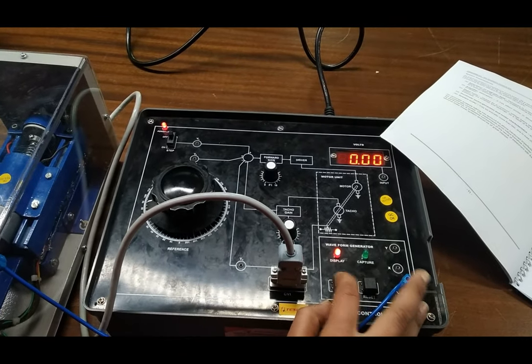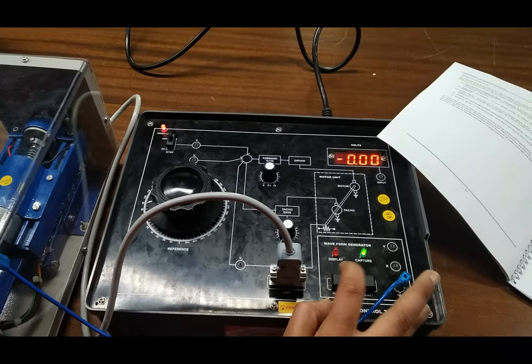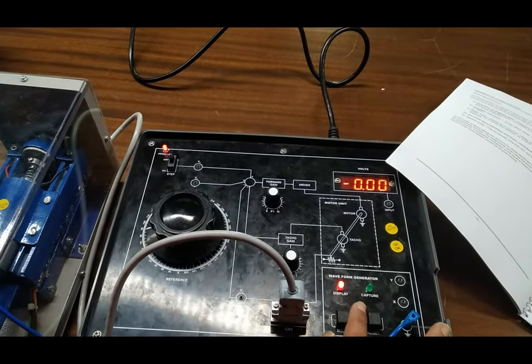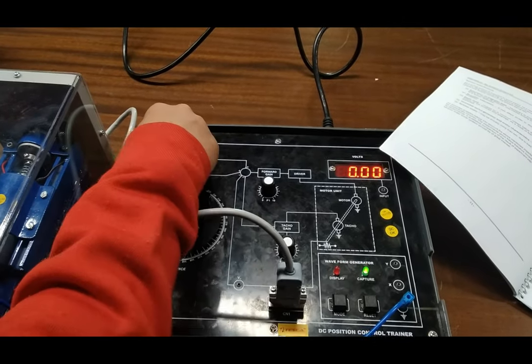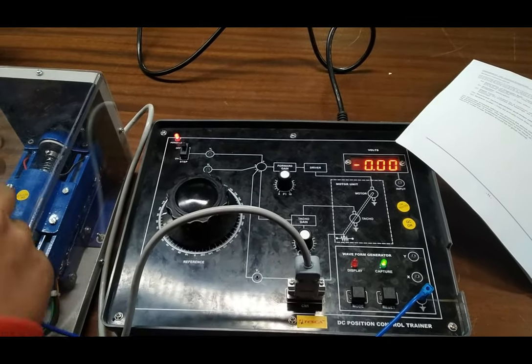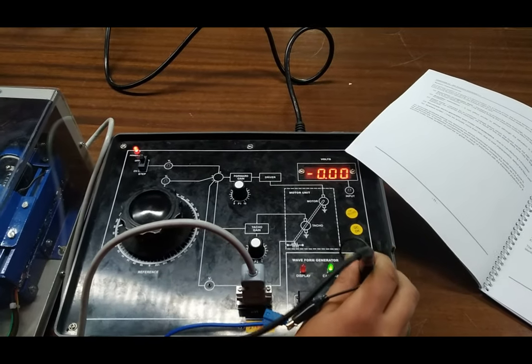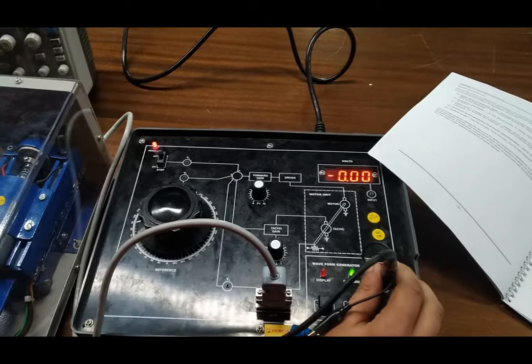We push the mode button, then capture is on. The reset button for display is on. We turn on the capture button and turn off this point. Then we check the output waveform on the oscilloscope from the X terminal.